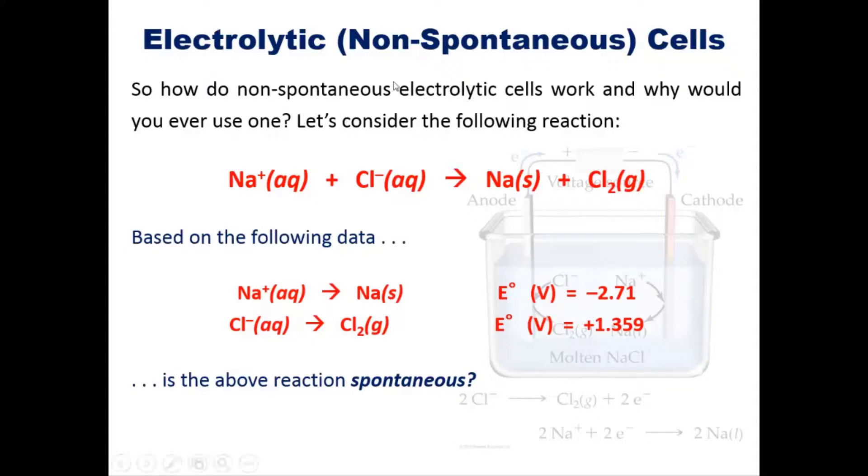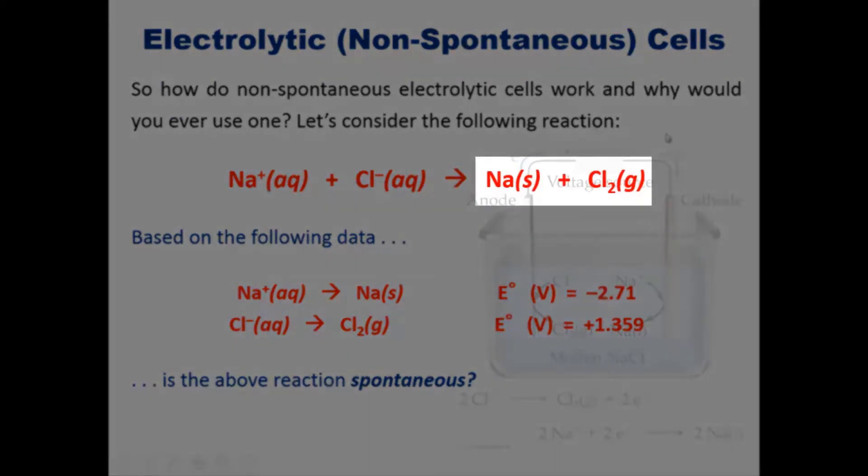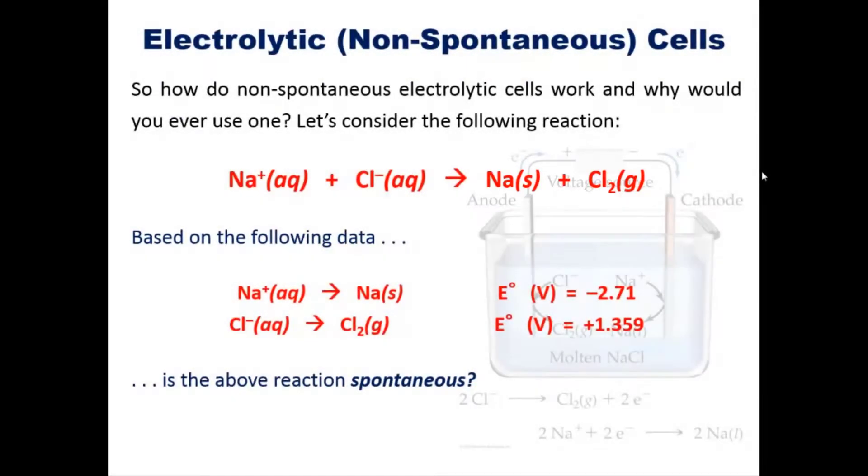And yet there still exists electrolytic cells industrially that do this. In other words, they push sodium cation and chloride anion energetically uphill to form sodium metal and chlorine gas. Because you're going energetically in a disfavored direction, this is not a spontaneous process and actually consumes energy. So why would you ever do it? The answer is simple: you do it in a circumstance where you want to manufacture sodium metal, that is sodium zero, or chlorine gas.